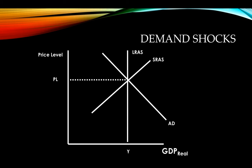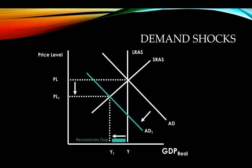Now let's look at a negative demand shock. The economy is at equilibrium — the long run, short run, and aggregate demand are all matched up. Then we have a decrease in aggregate demand. Price level goes down, output goes down, and we have created what's called a recessionary gap — the economy is working below its full potential. Unemployment increases, and lots of people don't have jobs.